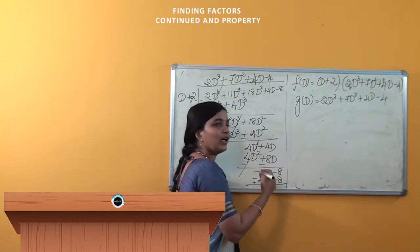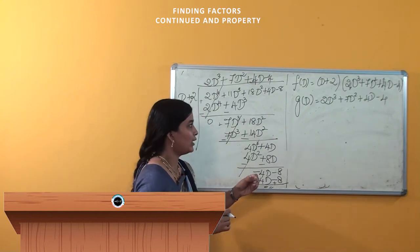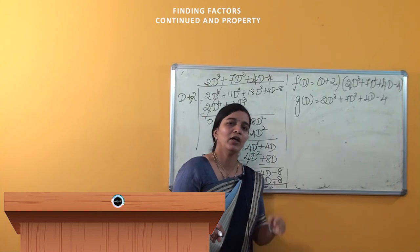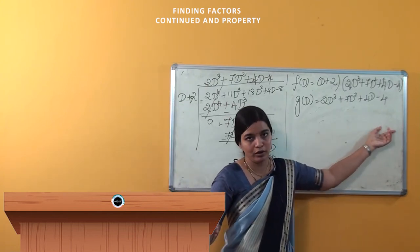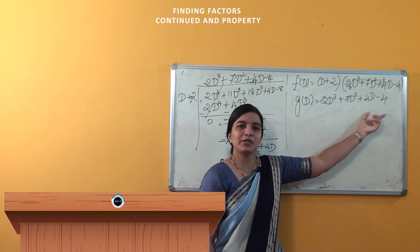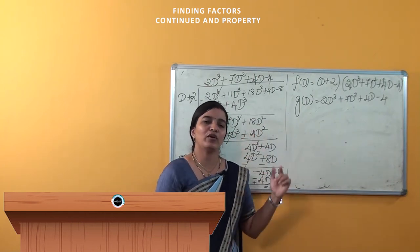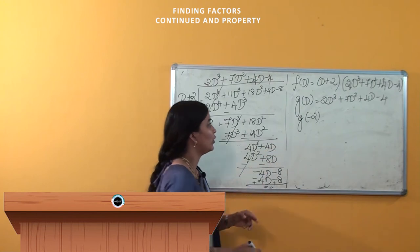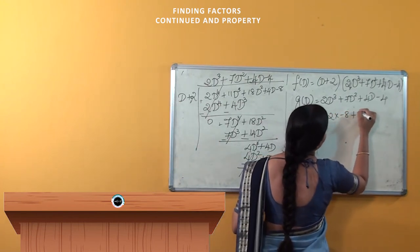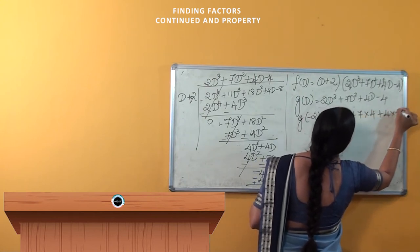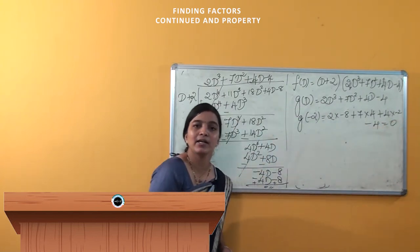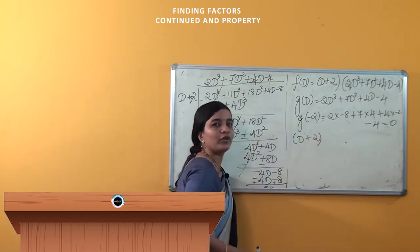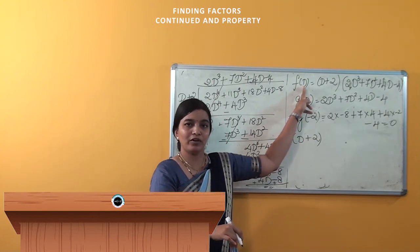Once again, we are using the trial and error method to find one of the roots. We will substitute d = 0, then d = 1, then d = -1, 2, -2, and check whether we get 0 or not. When I substitute 0, I will not get 0. Similarly, when you check for 1 and -1, we can observe that for d = -2, we get the value equal to 0: 2(-8) + 7(4) + 4(-2) - 4 = 0. So (d + 2) is also a root of g(d) and also a root of f(d). The next step is simplifying this equation using (d + 2).